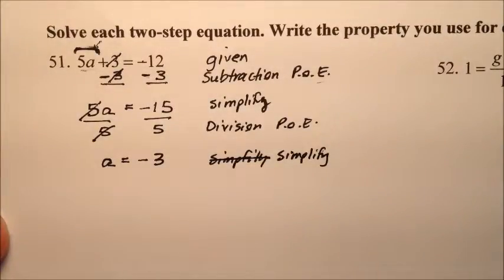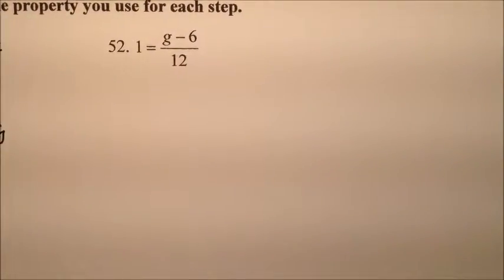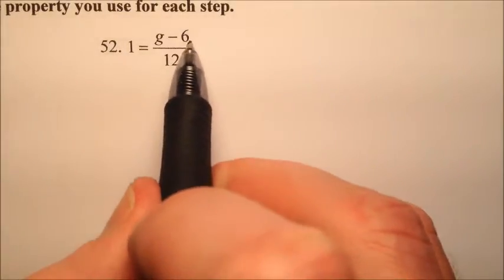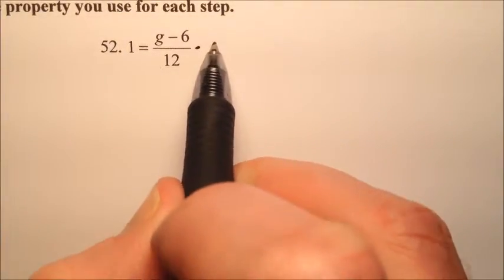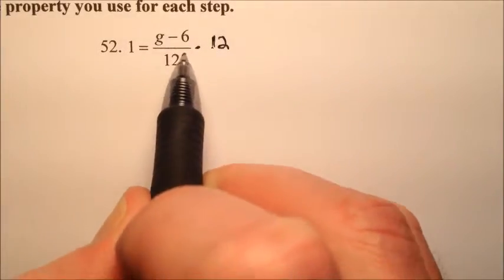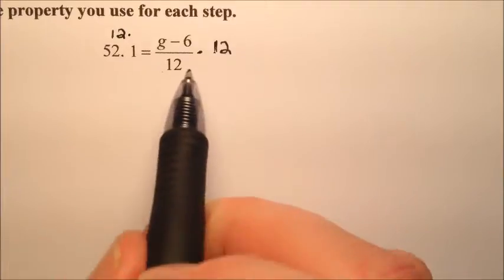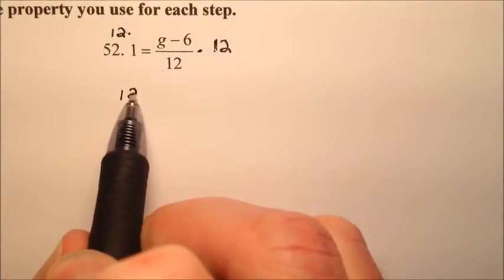A equals negative 3 is the solution for number 51. For number 52, we have 1 equals g minus 6 over 12. Since we have a fraction, we want to get rid of it by multiplying both sides by the common denominator, which is 12. So 12 times 1 becomes 12.